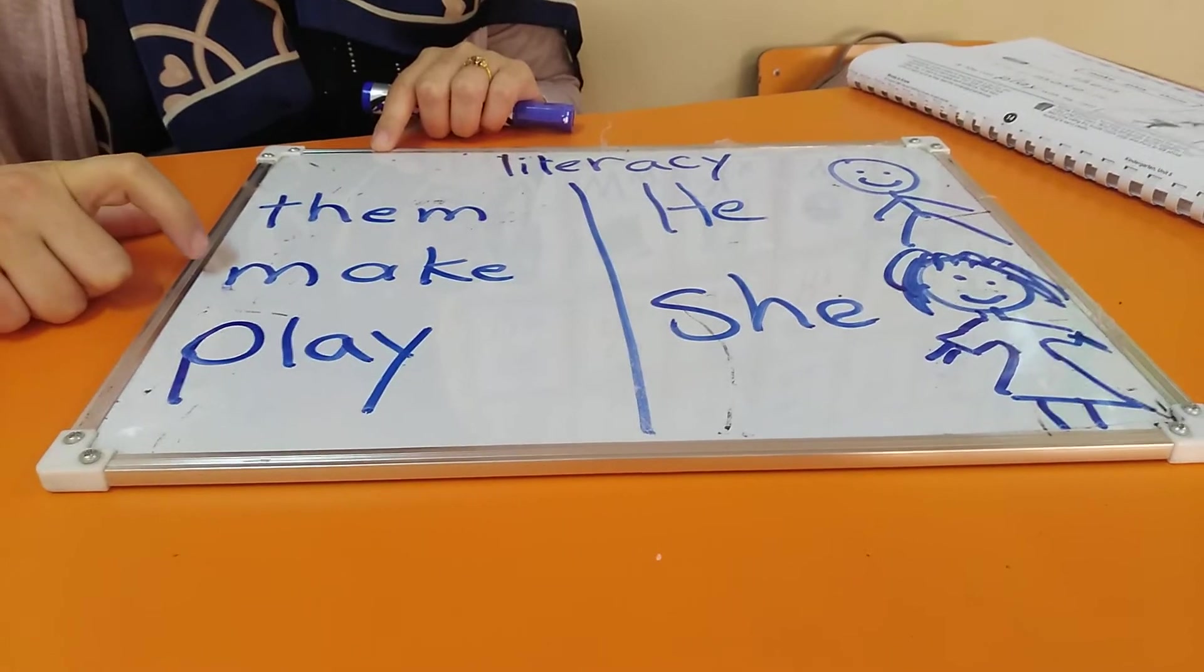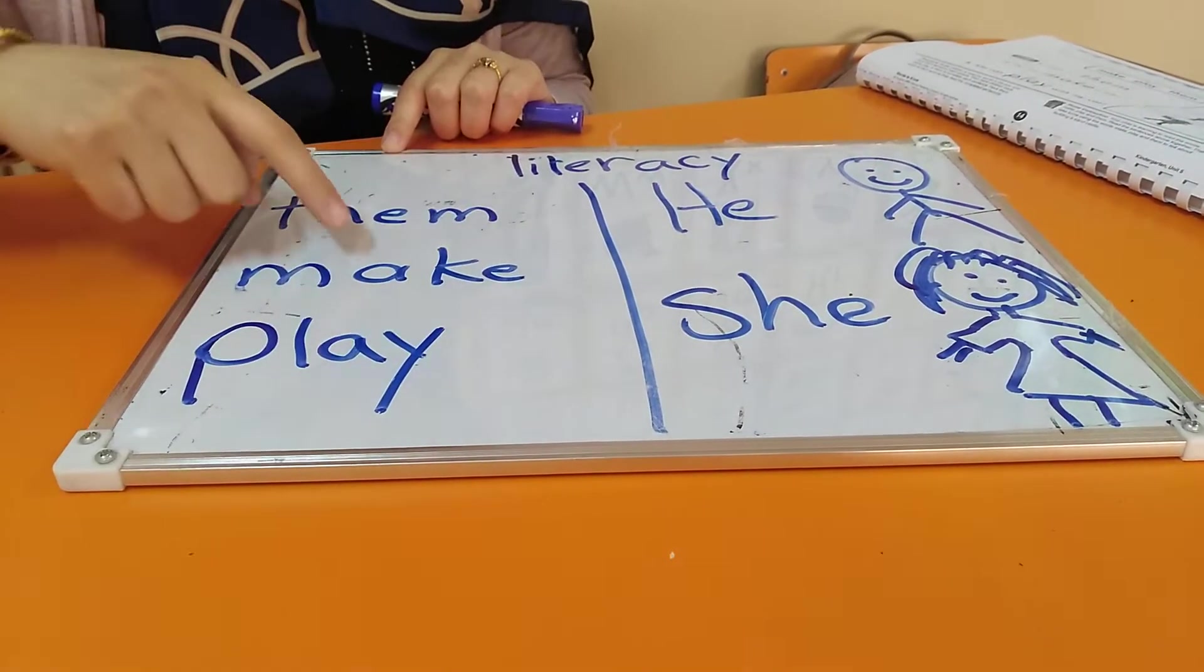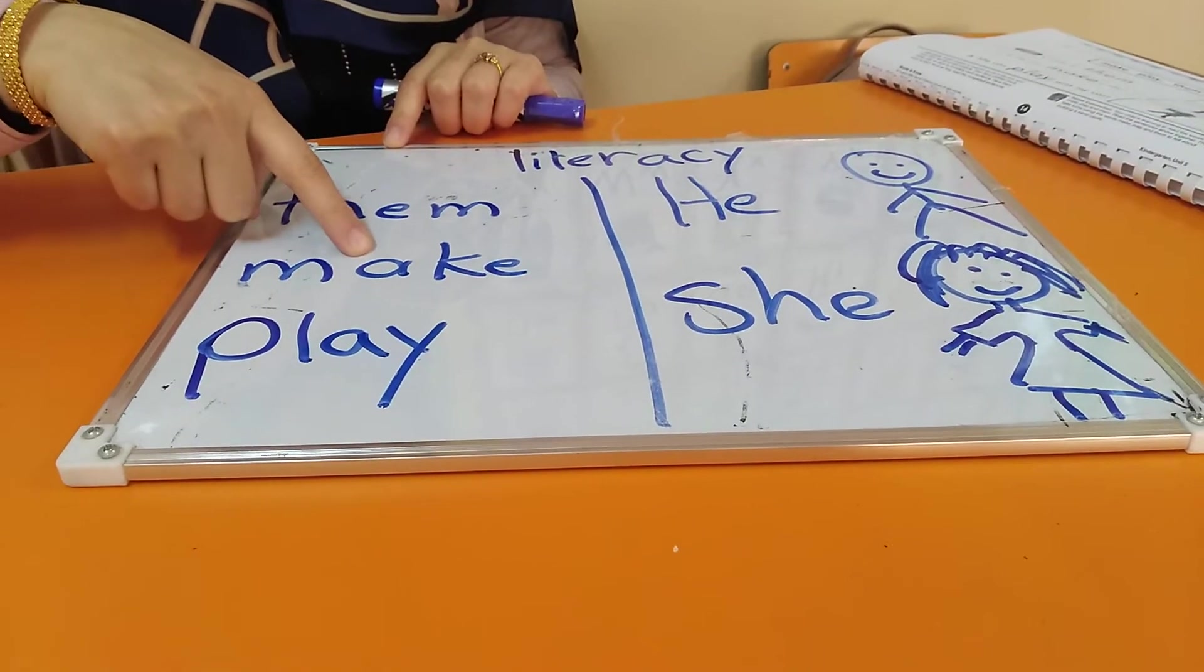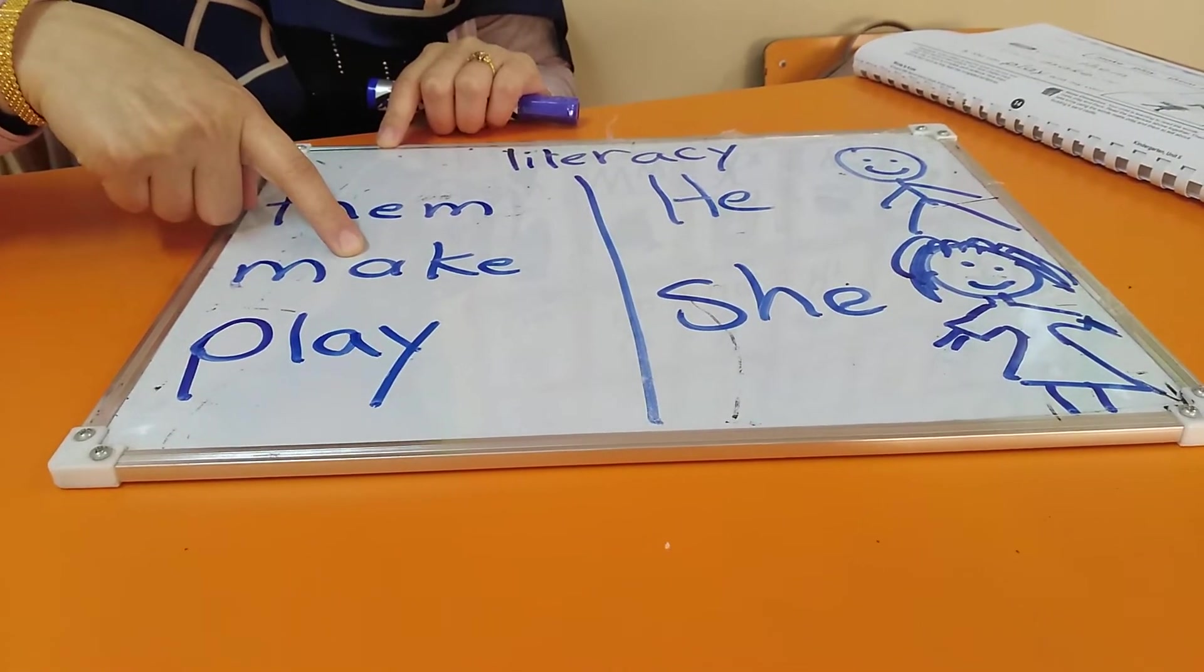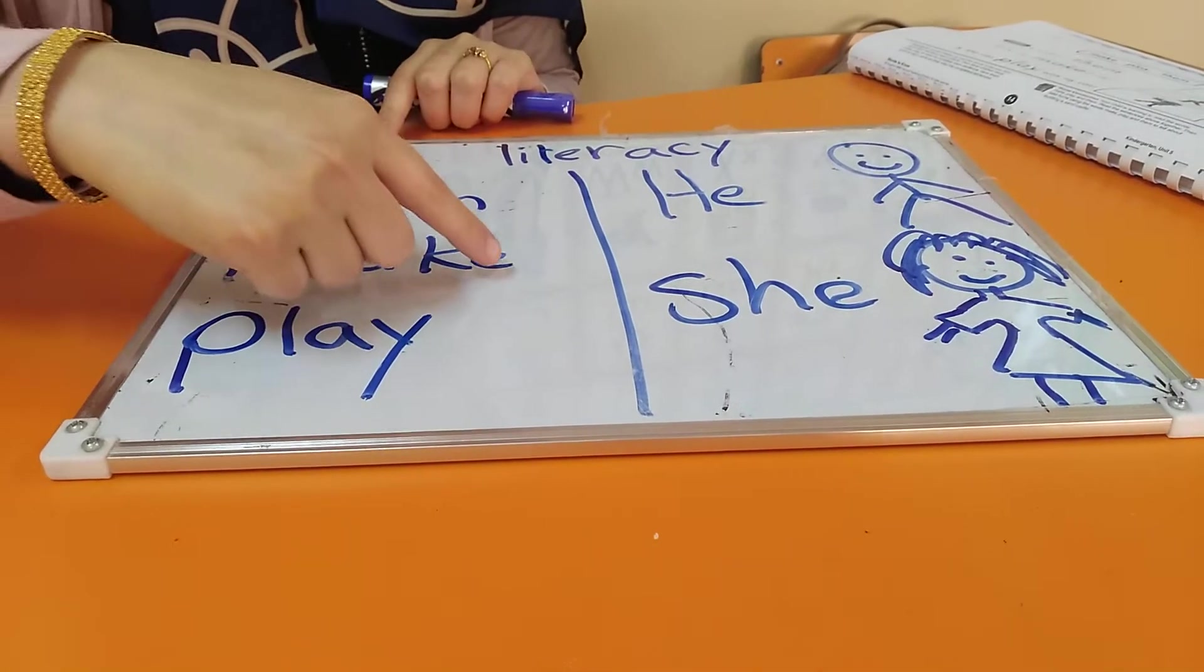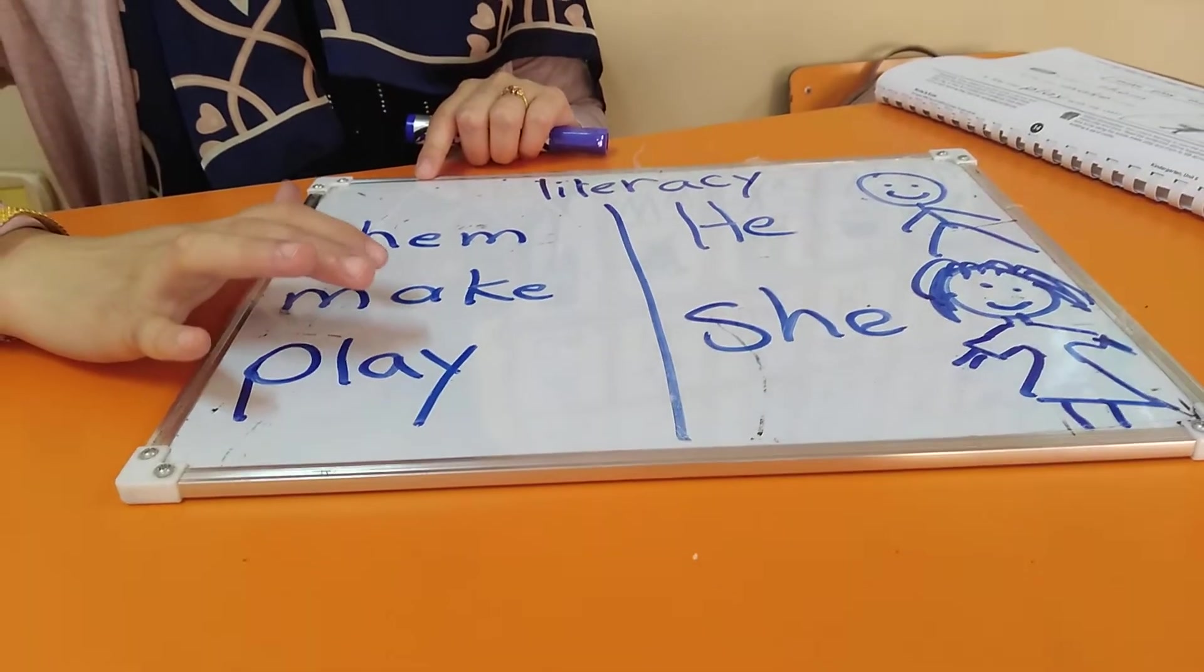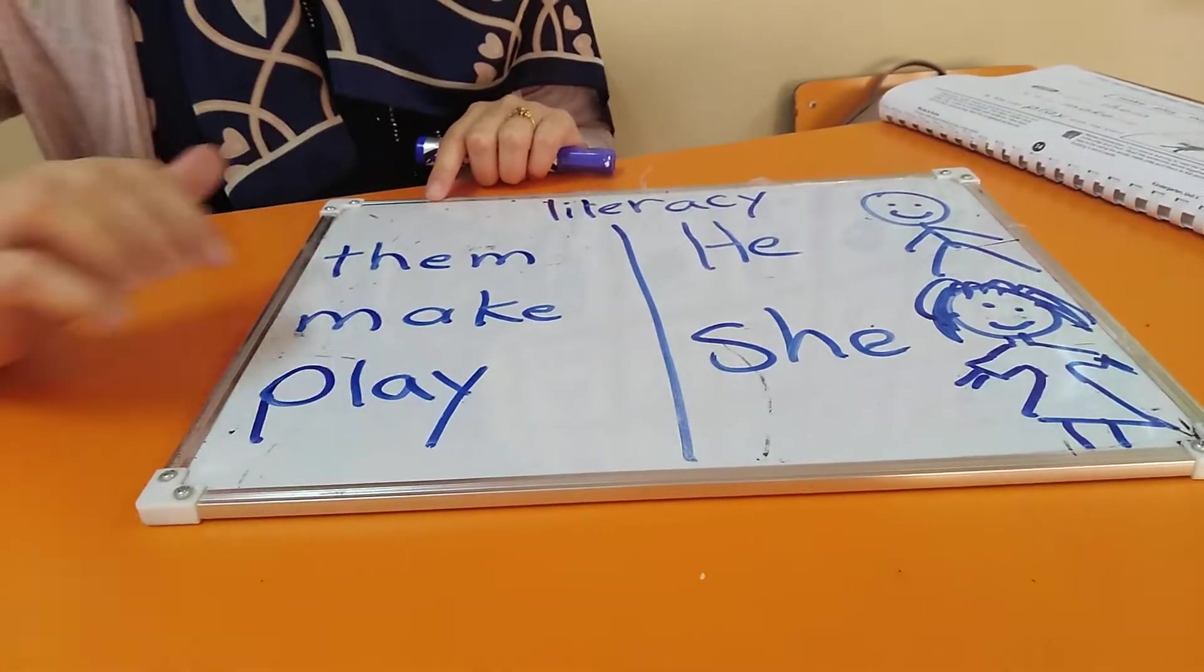What's this word? Make. When I see the E here, it's a magic E. It lets me pronounce letter A as A, not A. Make. Make. So, the magic E lets me pronounce A as A, not A. Make.